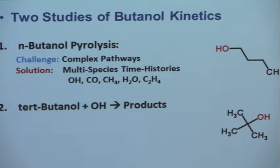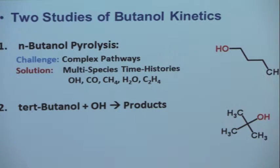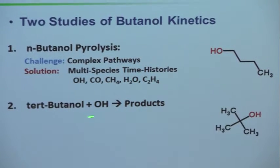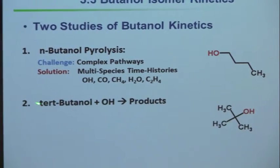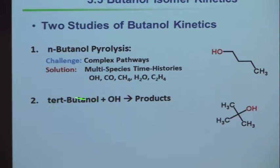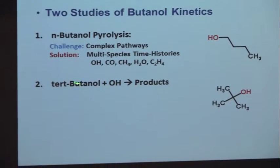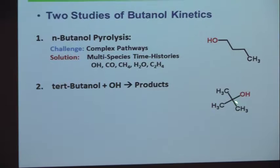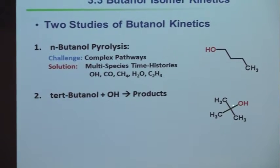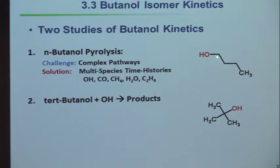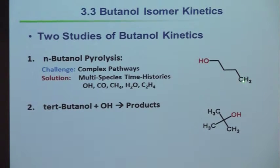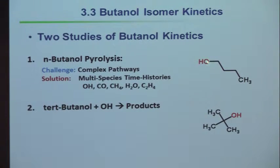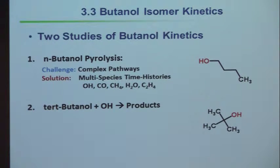Butanol comes in four different forms — four isomers. One of them is tert-butanol, where you have three methyl groups and the OH hanging off to the side. This is a contrast with normal butanol, in which the OH is on the end. The rate coefficients are going to be different for those two cases.